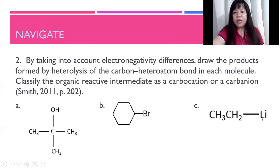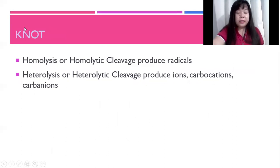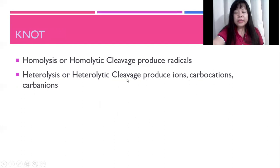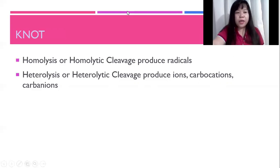Finally, to note everything again: we have learned the types of bond cleavage for this lesson — homolysis and heterolysis. Homolytic cleavage produces radicals while heterolytic cleavage produces ions. Specifically for carbon, we may produce either carbocations or carbanions. I hope that this has helped you with understanding Lesson 2.3, Types of Bond Cleavage. Thank you and goodbye, class.